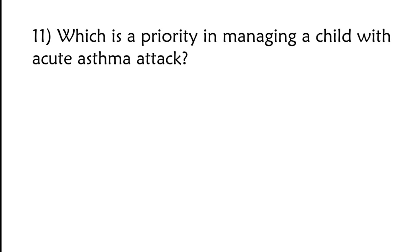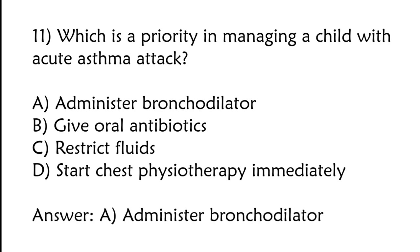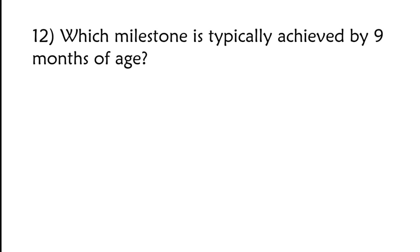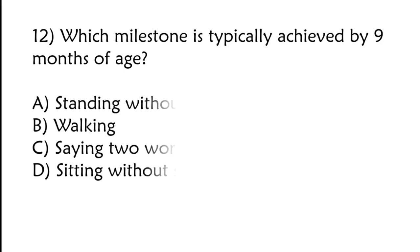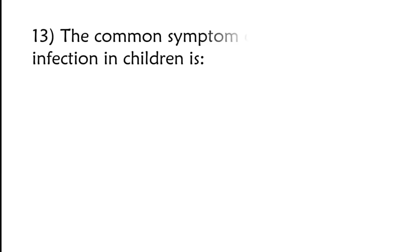Which is a priority in managing a child with acute asthma attack? Administer bronchodilator, give oral antibiotics, restrict fluids, start chest physiotherapy immediately. Correct answer is option A, administer bronchodilator. Which milestone is typically achieved by nine months of age?